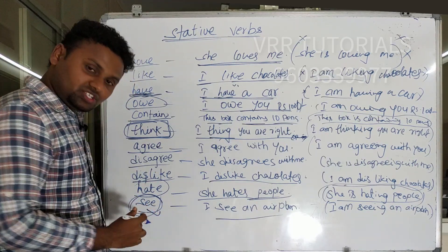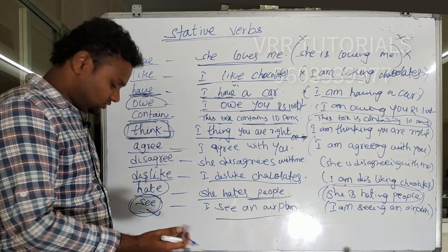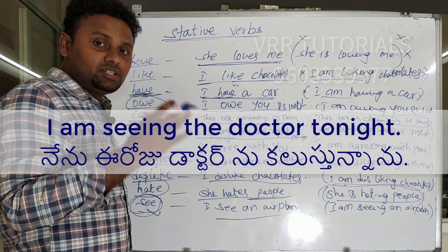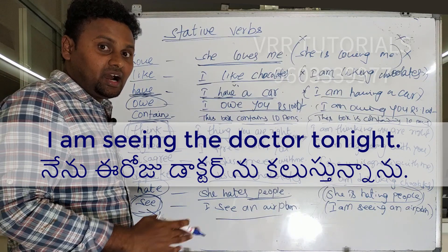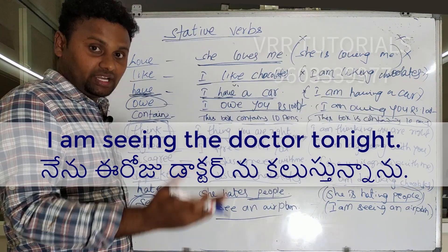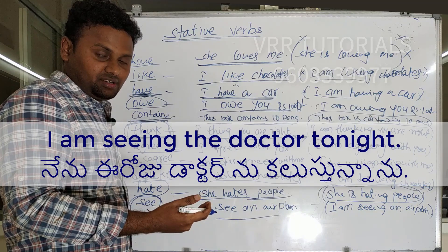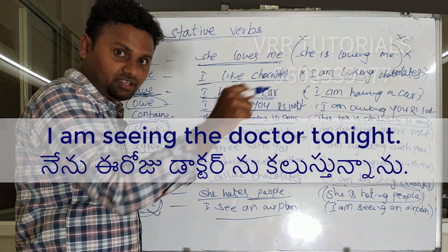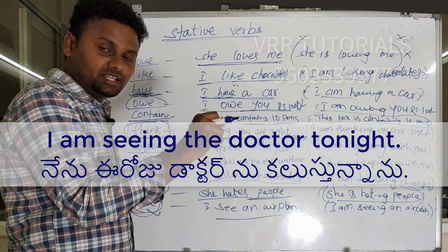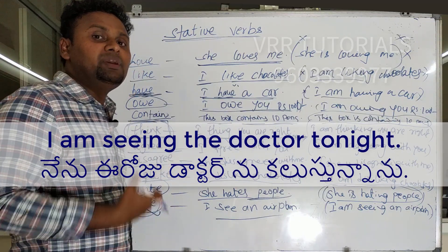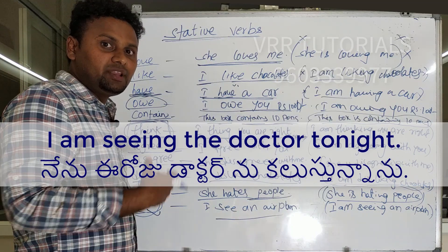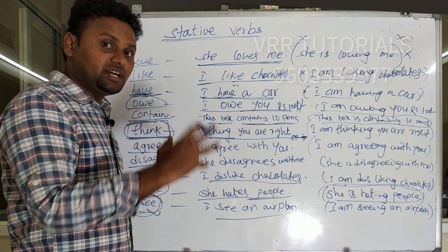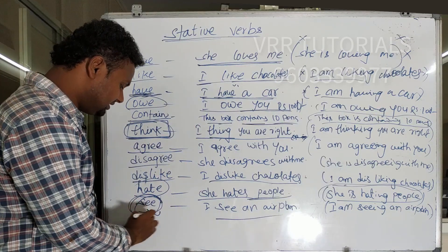However, 'see' can also function as a dynamic verb. For example: I am seeing the doctor tonight. This is an expression in English. 'I am seeing the doctor tonight' means you are meeting the doctor tonight — you are not literally going and seeing. In that case, 'see' functions as dynamic and continuous is correct.